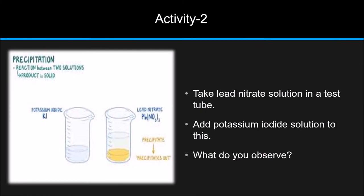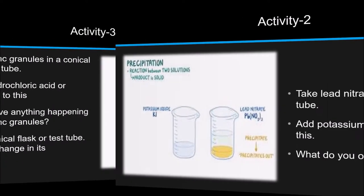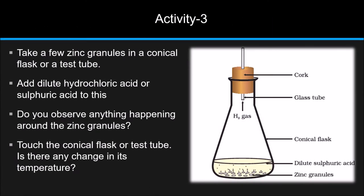Activity 2. Take lead nitrate solution in a test tube. Add potassium iodide solution to this. What do you observe? Activity 3. Take a few zinc granules in a conical flask or a test tube. Add dilute hydrochloric acid or sulfuric acid to this. Do you observe anything happening around the zinc granules? Touch the conical flask or test tube. Is there any change in its temperature?